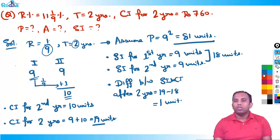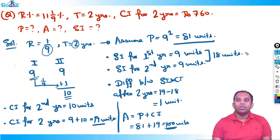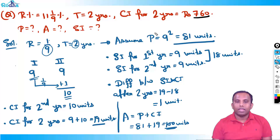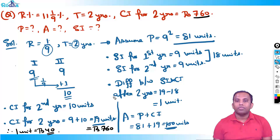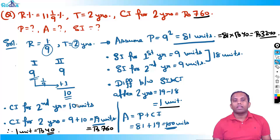Given CI for 2 years is 760, and CI for 2 years is 19 units, so 19 units equals rupees 760. Therefore 1 unit is rupees 40. What is principle? 81 units × 40 = rupees 3240. What is difference between SI and CI? 1 unit = rupees 40. What is CI for the second year? 10 units × 40 = rupees 400. Everything you can calculate using this method.